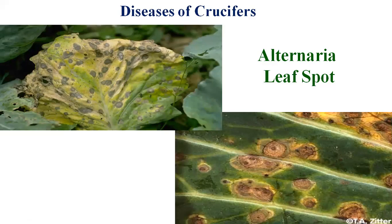The first disease of the crucifer is Alternaria leaf spot, also known as Alternaria leaf blight. The causal organism is Alternaria brassicicola. Alternaria is known as a disease-causing pathogen which causes infection in leafy vegetables as well as in crucifers. As you can see in the image, circular spots arise on the leaves, particularly in crucifers. The most targeted crops are cabbage and cauliflower, but almost all cruciferous family crops are infected by Alternaria.